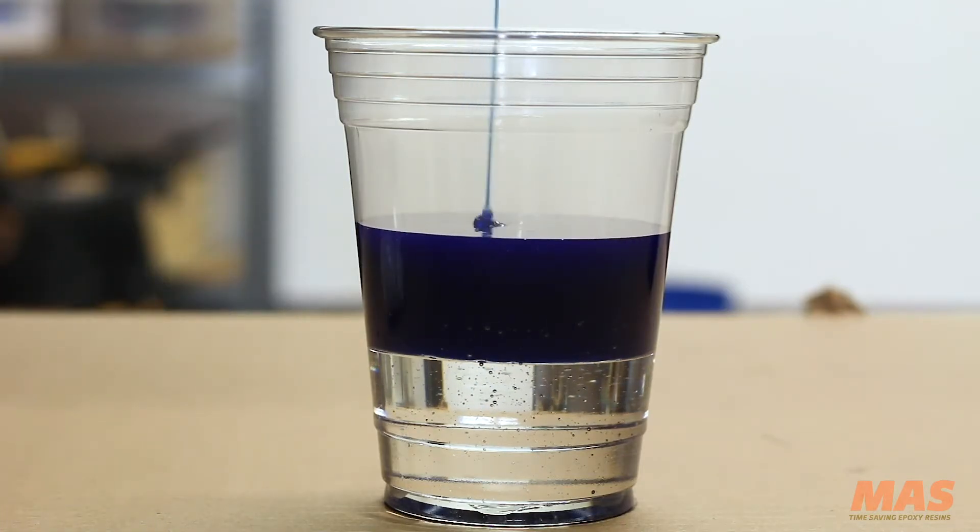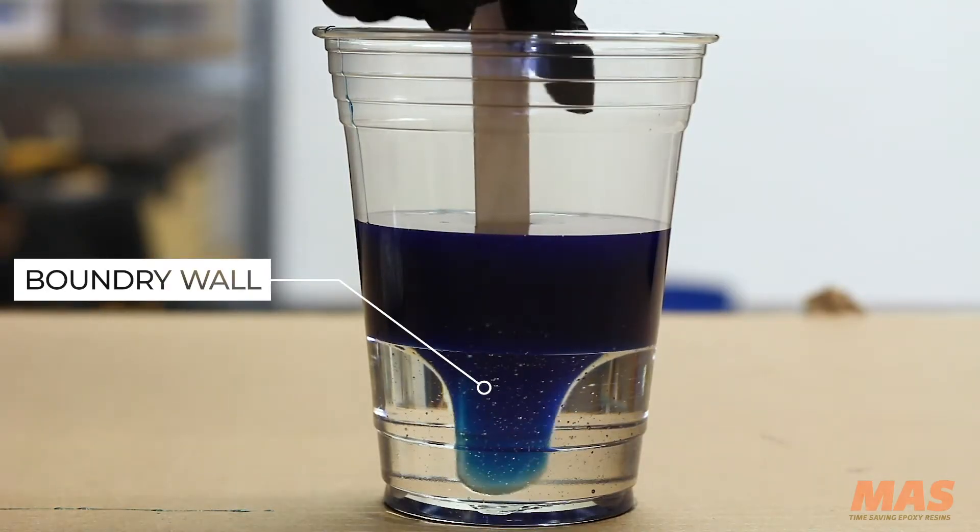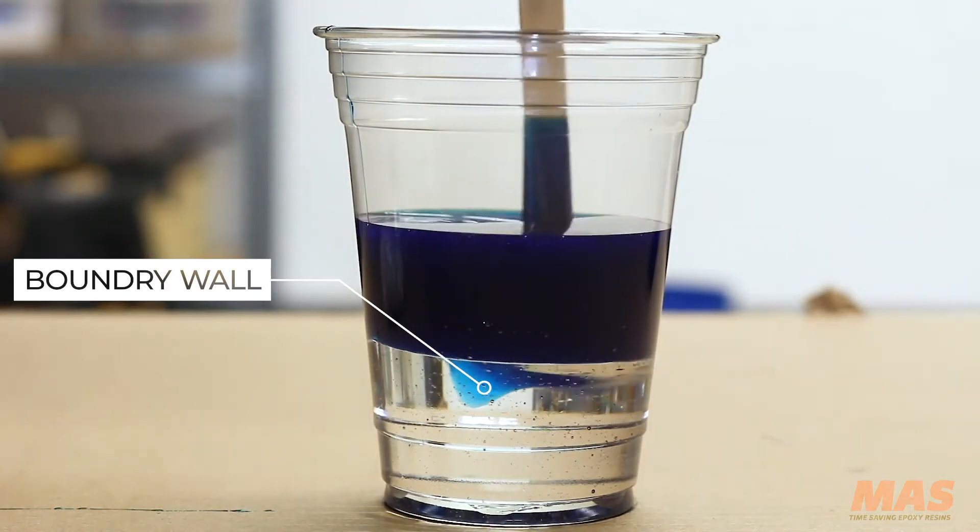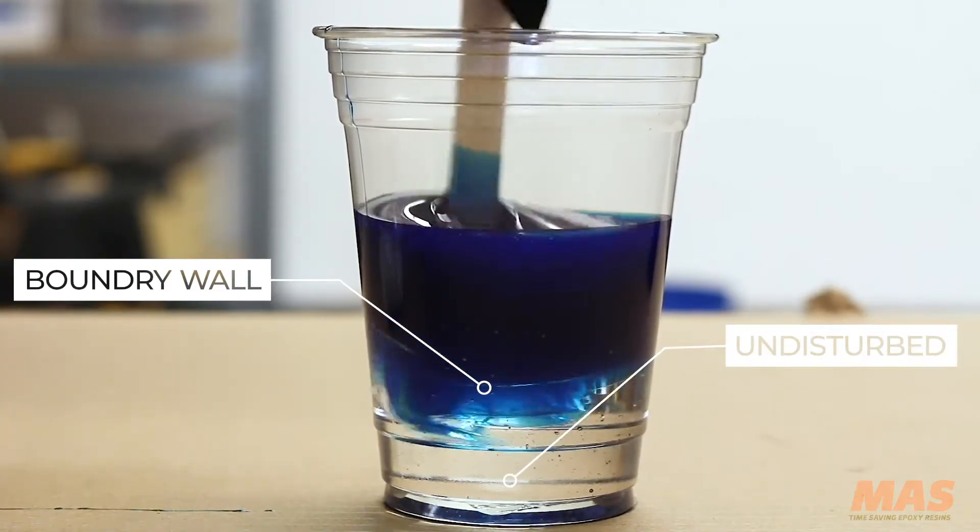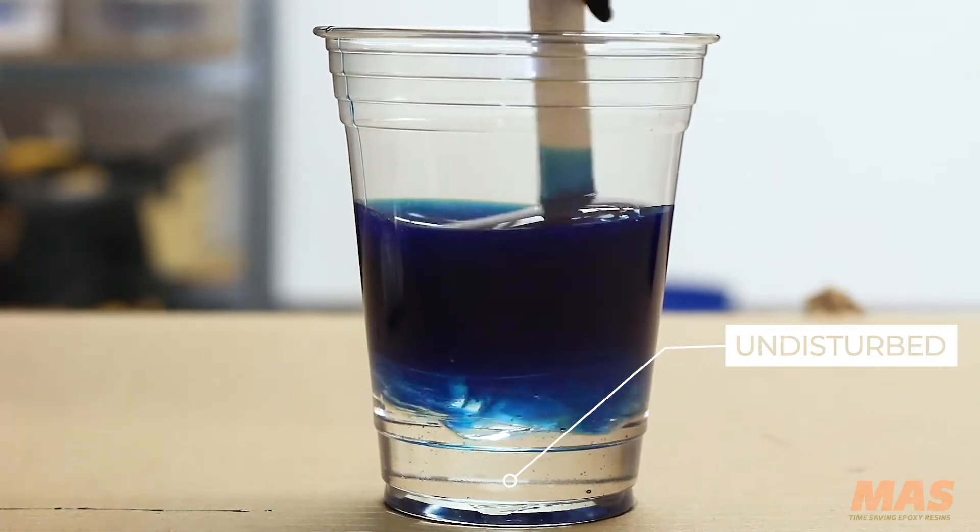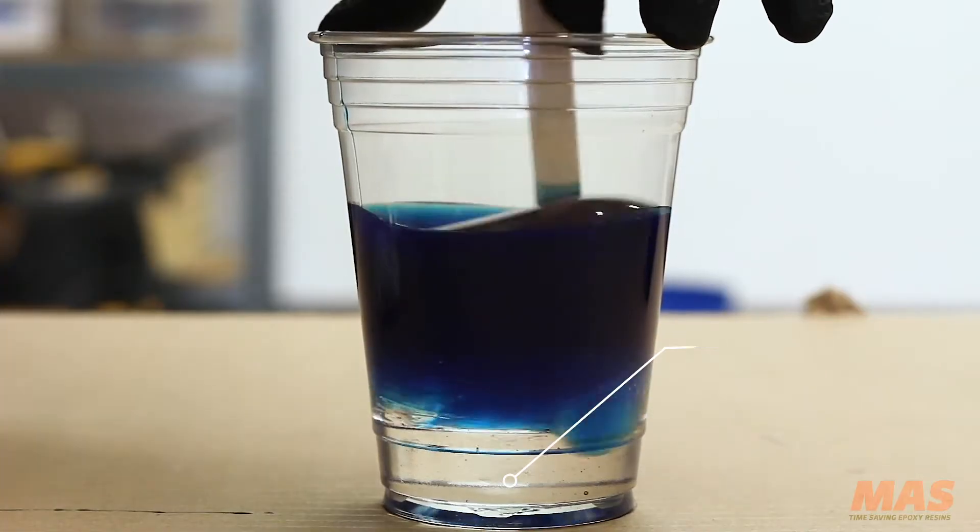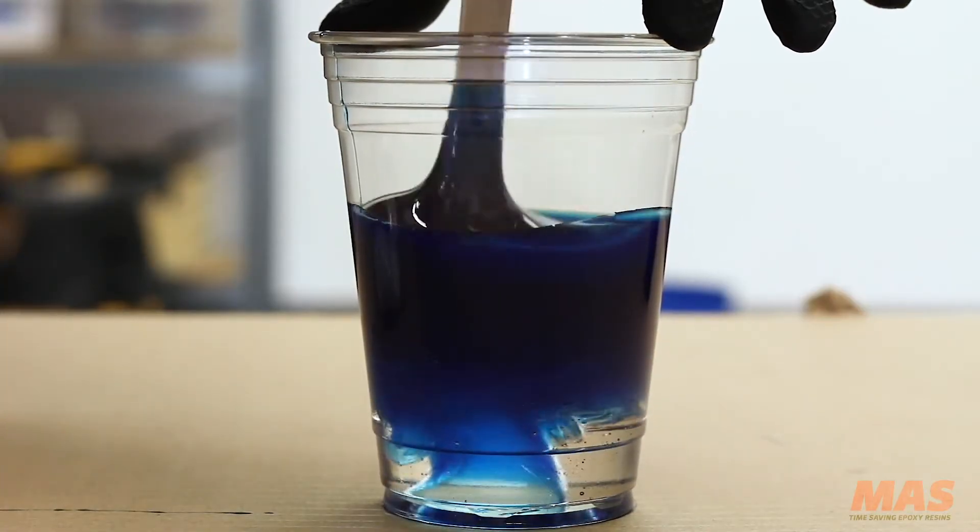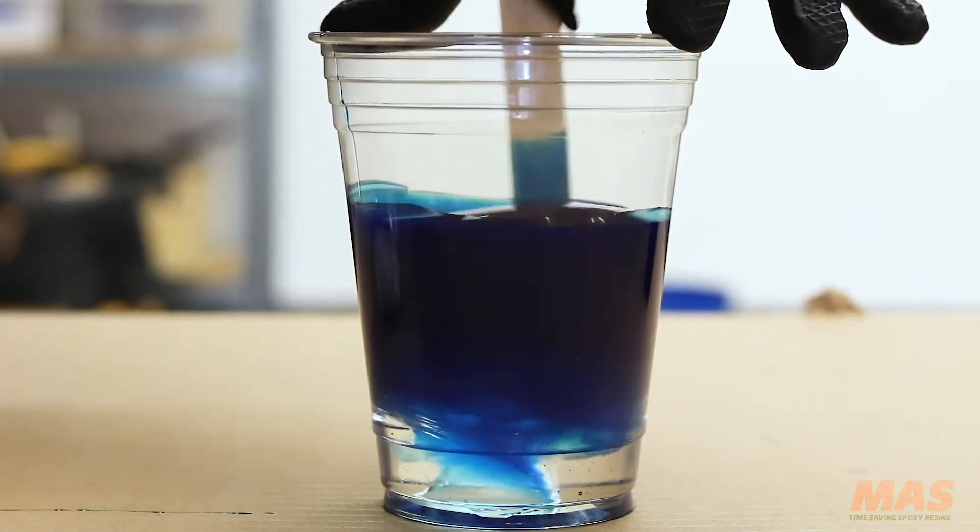I really like this example because as you're mixing the two components together you can see that boundary wall as well as how the bottom is completely undisturbed and untouched. So if you're just gently agitating at the surface of the epoxy, you're never gonna mix the bottom of it, and if you dump that out you're gonna have a lot of part A, the resin, just kind of floating around on your tabletop or whatever your project is, and it's not gonna cure—it's gonna remain soft or sticky.